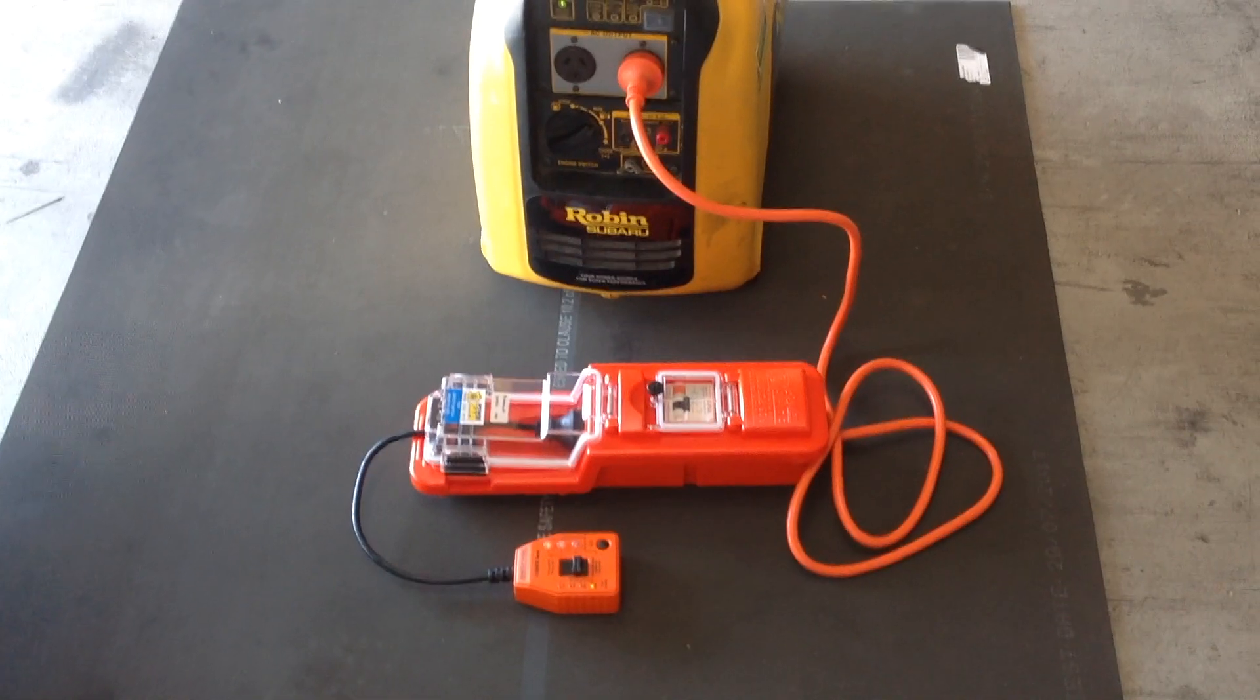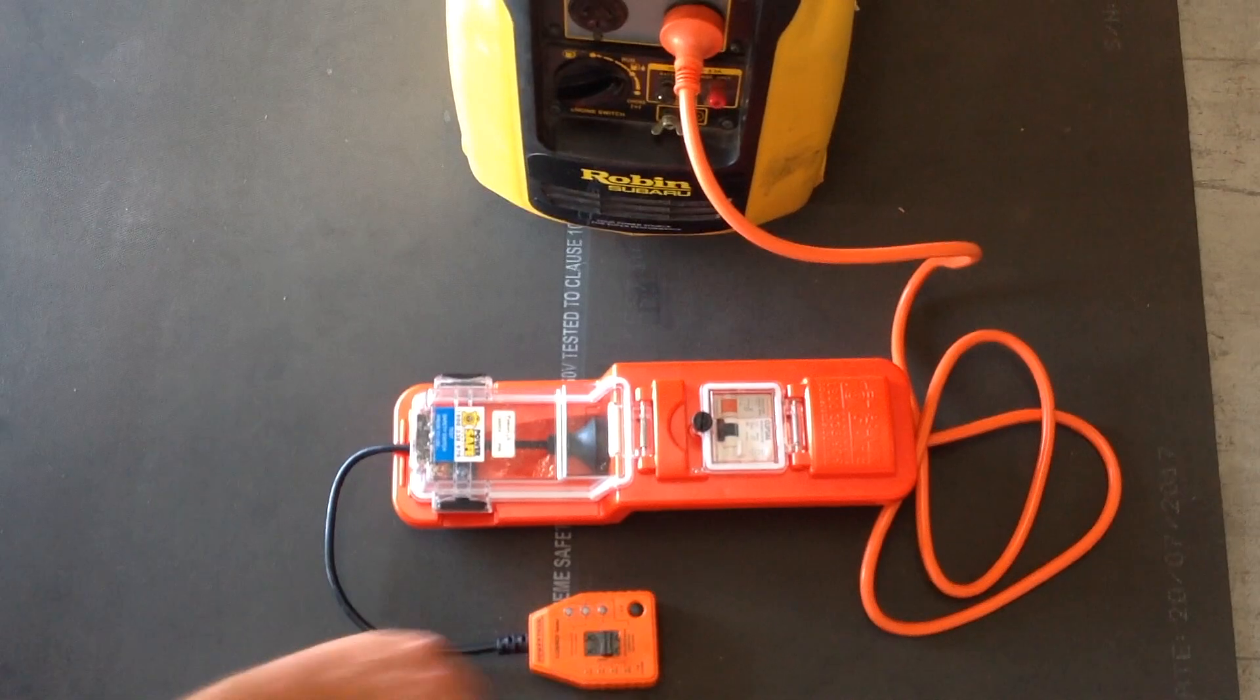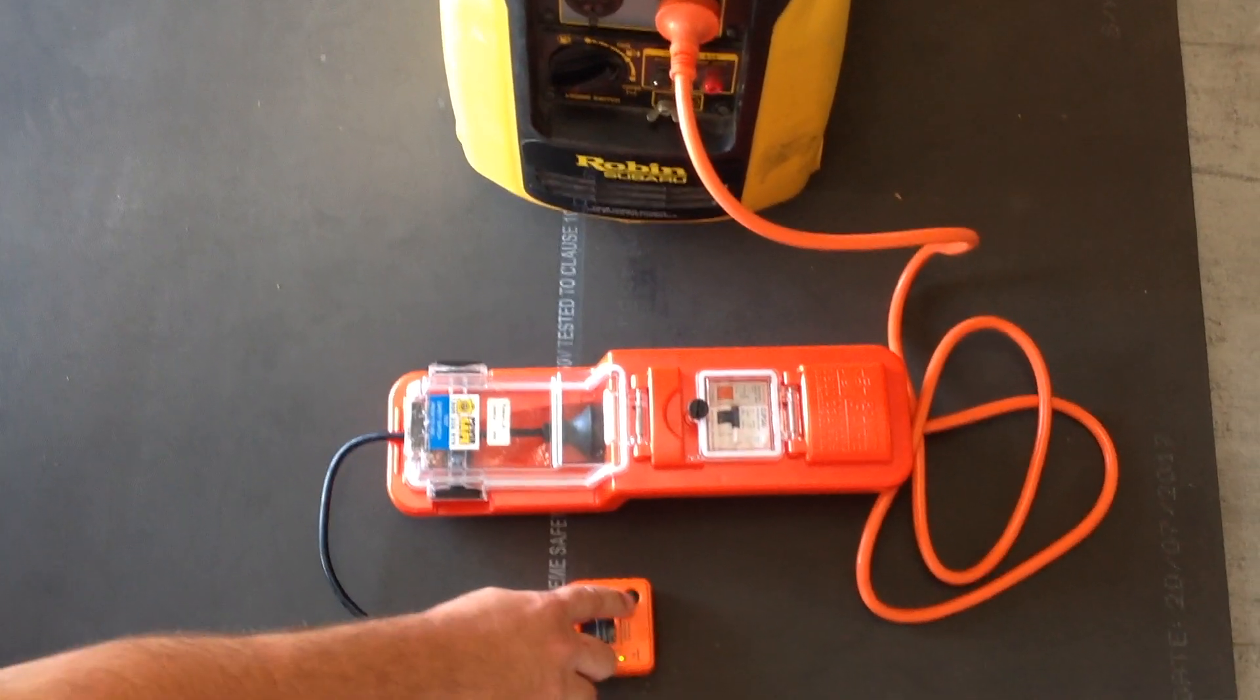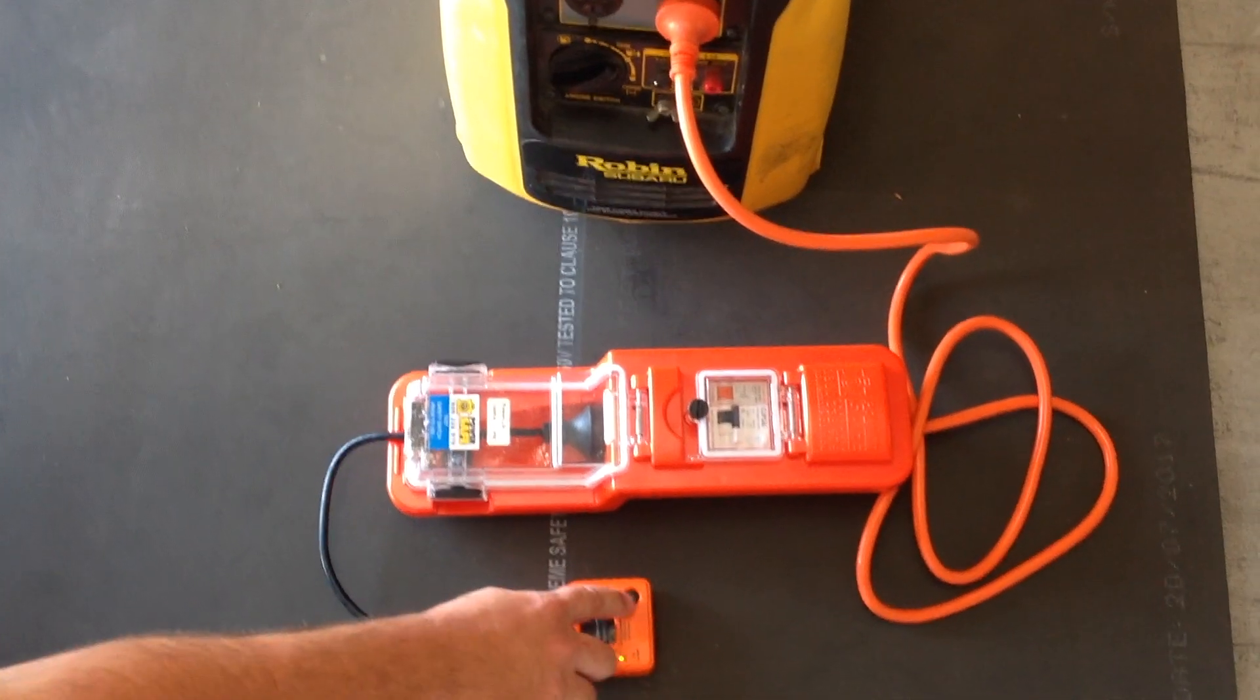so in the event that a first fault occurs, then the ESD part of the DUO will trip the device as it is measuring voltage on the earth circuit, and see that the earth circuit has potential voltage greater than 38 volts.